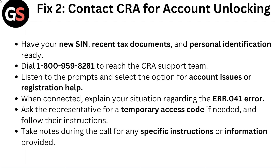Fix 2: Contact CRA for account unlocking. Have your new SIN, recent tax documents, and personal identification ready. Dial 1-800-959-8281 to reach the CRA support team. Listen to the prompts and select the option for account issues or registration help. When connected, explain your situation regarding the ERR.041 error. Ask the representative for a temporary access code if needed and follow their instructions. Take notes during the call for any specific instructions or information provided.